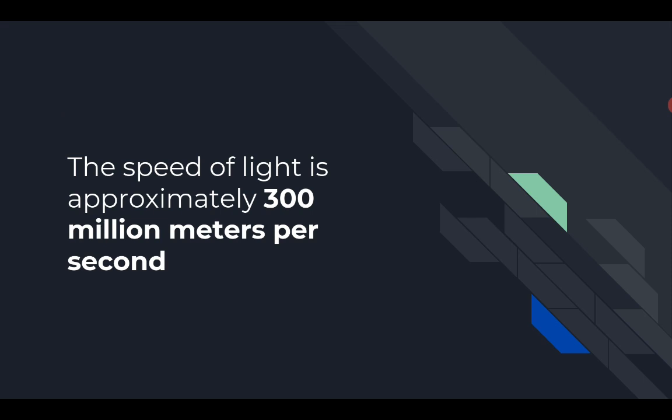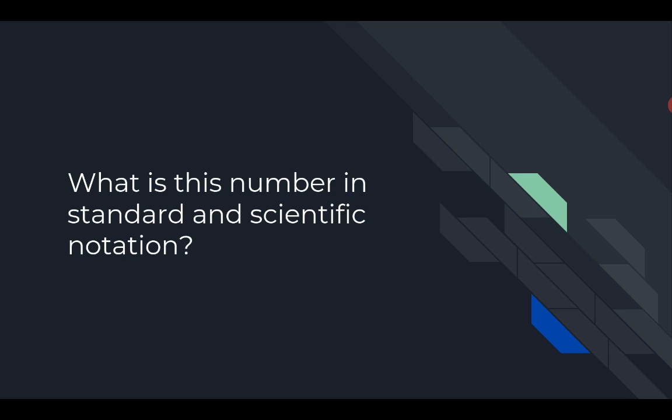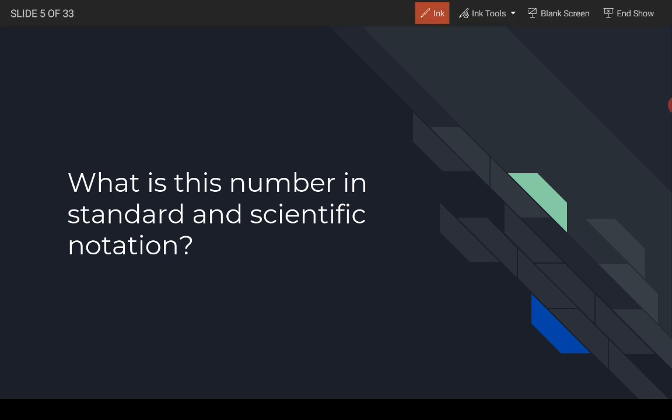The speed of light is approximately 300 million meters per second, so go ahead and fill that in — 300 million is the first blank in the worksheet. Now, even though most people just say 300 million, we're going to write it out in two forms: standard and scientific notation. You should be doing that on your worksheet, so pause and do that now.